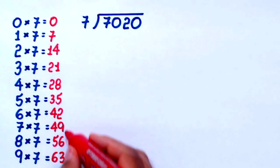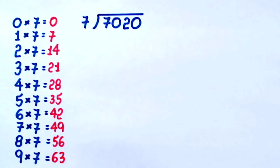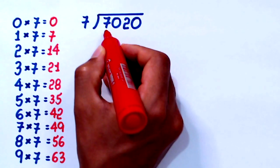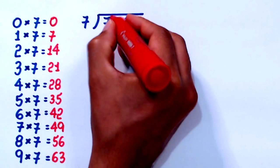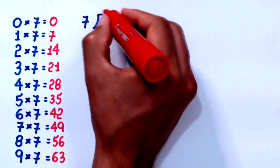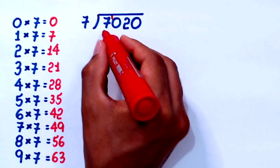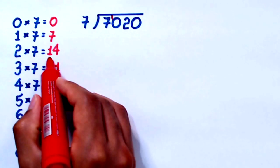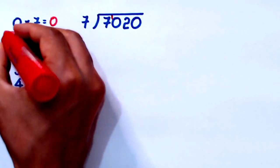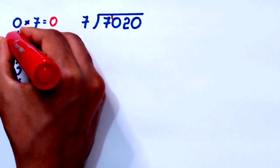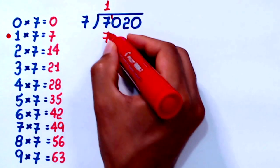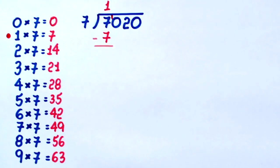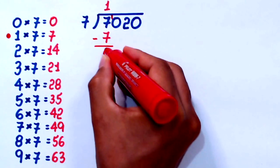With the multiplication table available like this, you will see division becomes very easy. We start by taking a look at the first digit of the dividend. Since we have 7 here and also 7 as the divisor, we ask: how many times does 7 go into 7 without going over? 2 times 7 is already too much because it is 14. So the number we were looking for is 1. I write 1 here. Since 1 times 7 equals 7, I write it here and then I subtract. 7 minus 7 equals 0.